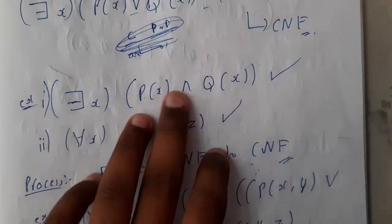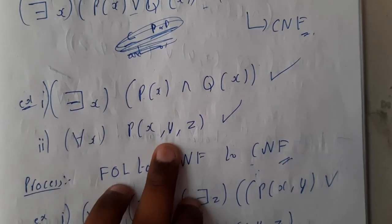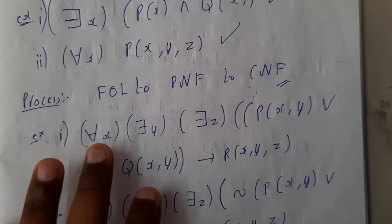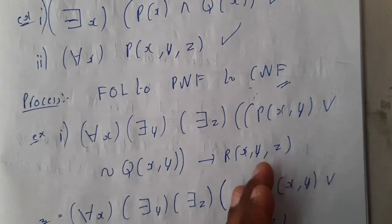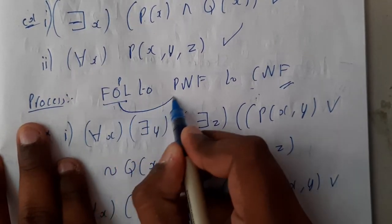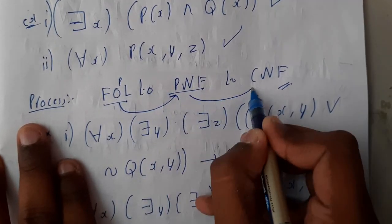This is also in CNF because in between and, so here there is no symbol, so it's directly in CNF and PNF. The process of conversion to CNF is: first we will be getting the logic, converting that to PNF, and from PNF we will be converting it to CNF.